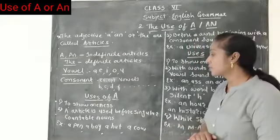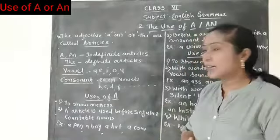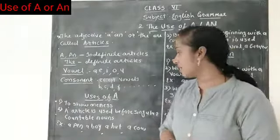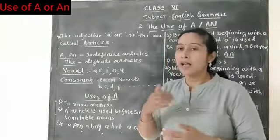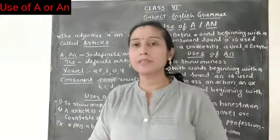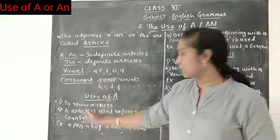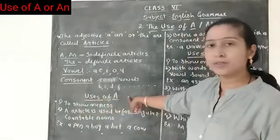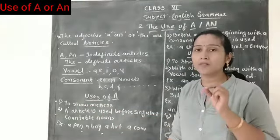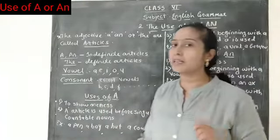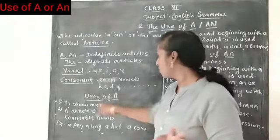The article A is used before singular countable nouns — when a thing is singular and countable, we use the article A. The first rule is: A is used to show oneness. When something is one, we use the article A. To show oneness is the first rule of uses of A.